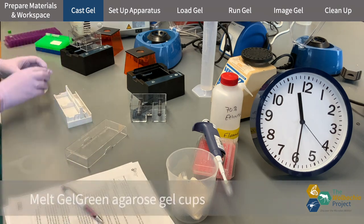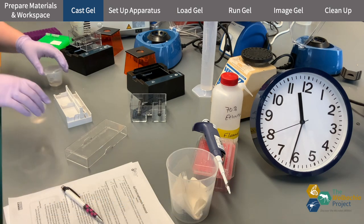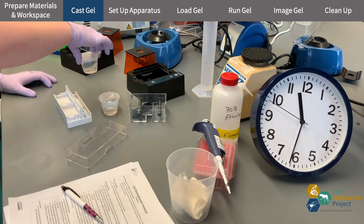I peel off a little of the plastic off of the tops of the gel green gel cups from Mini One and microwave them for about 20 seconds or until it's all melted and there are no lumps.